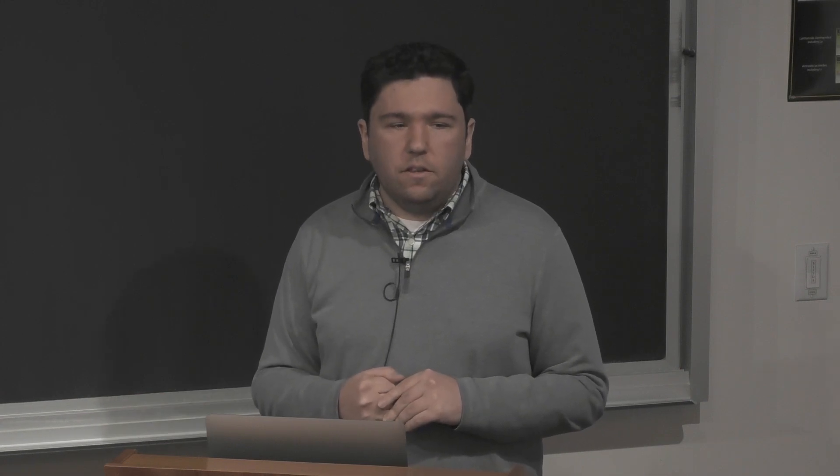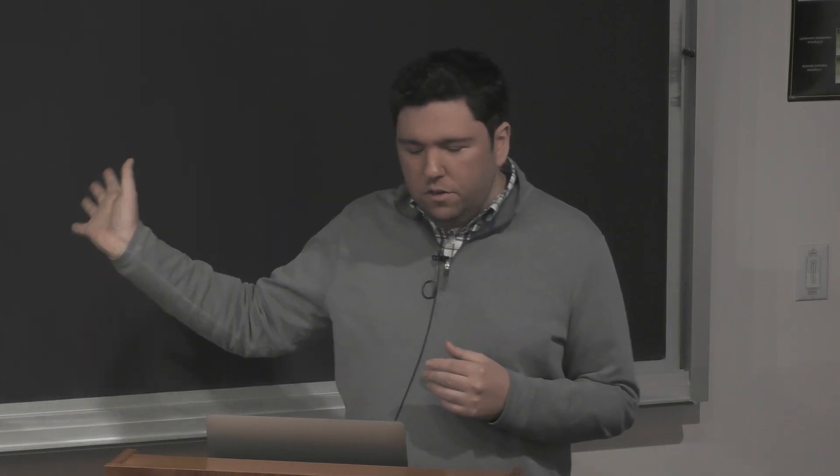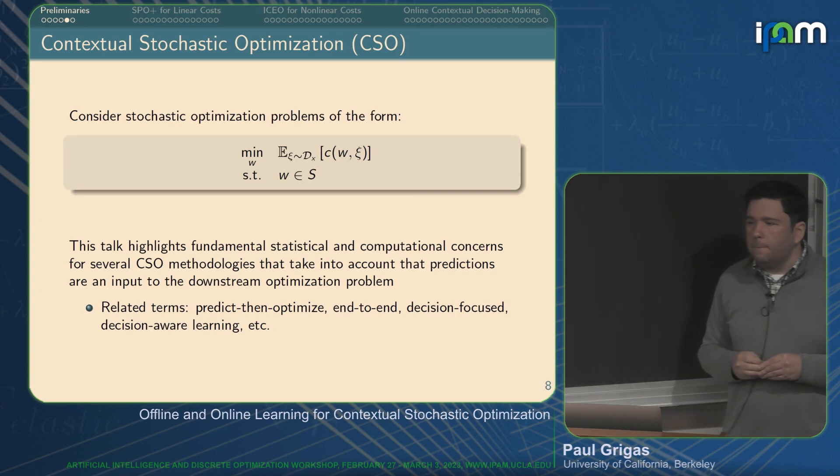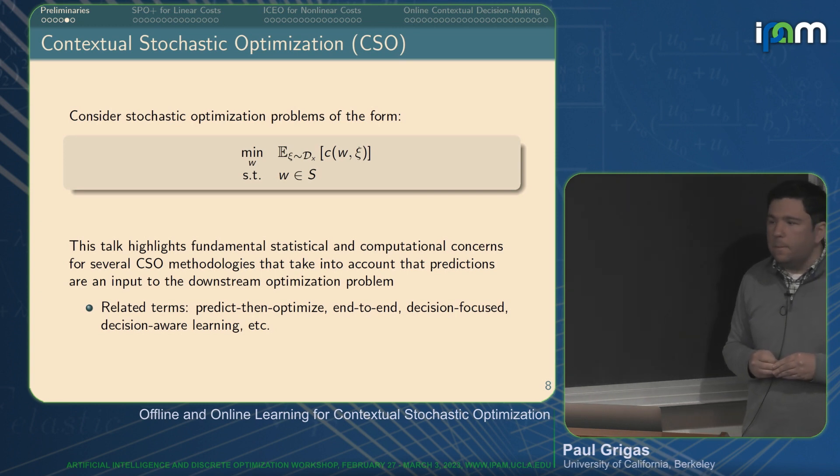This framework could account for two-stage problems in a simple way, since I'm assuming convexity of the cost function. You could model something like that here, but generally speaking it is a contextual stochastic problem. It wouldn't be hard to add additional variables for two stages, but for simplicity here it's really just one vector of decision variables w.